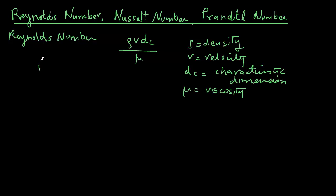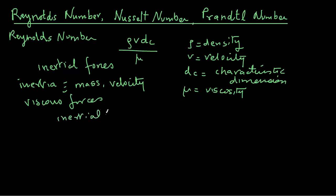The terms in the numerator are related to the inertial forces of the moving fluid. Recall from physics that inertia of a moving object is related to mass and velocity. The denominator is related to the viscous forces. Thus, Reynolds number is a ratio between inertial forces and viscous forces.